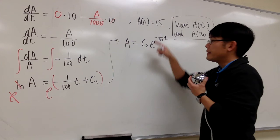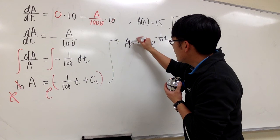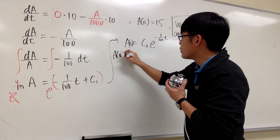But now I have to use the initial condition to solve for C2. This is A as the function of T, so I'll put down A of T. Well, I know A of 0, this right here, is equal to 15.